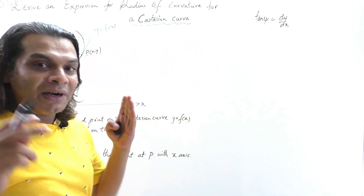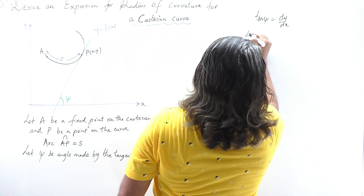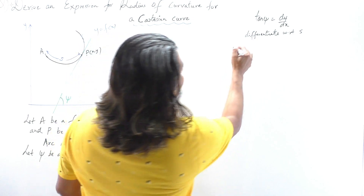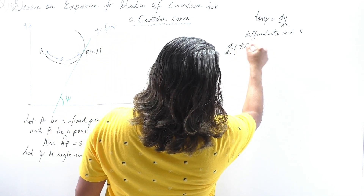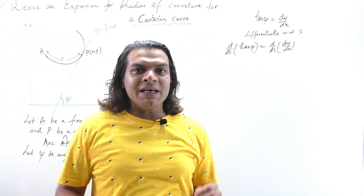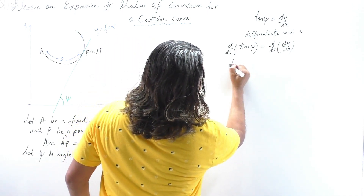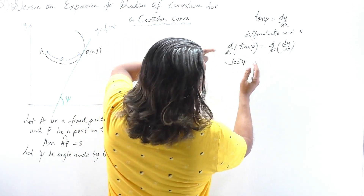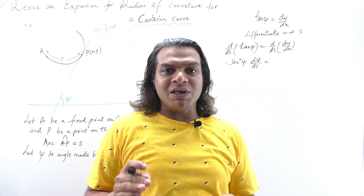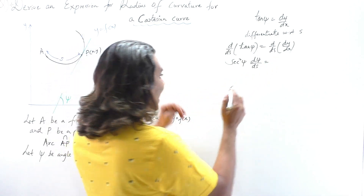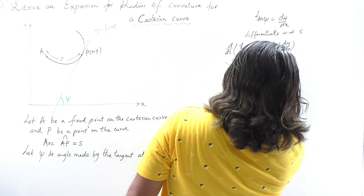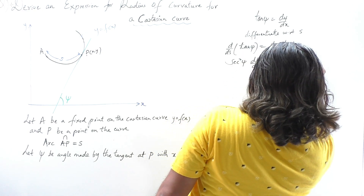The differentiation of tan ψ gives sec²ψ · (dψ/ds). We rewrite the right-hand side using the chain rule as d/dx(dy/dx) · (dx/ds). There are three expressions to remember: sin ψ = dy/ds, cos ψ = dx/ds, and tan ψ = dy/dx. So dx/ds = cos ψ. We have sec²ψ · (dψ/ds) = (d²y/dx²) · cos ψ. By definition, dψ/ds = 1/ρ, so sec²ψ · (1/ρ) = (d²y/dx²) · cos ψ.